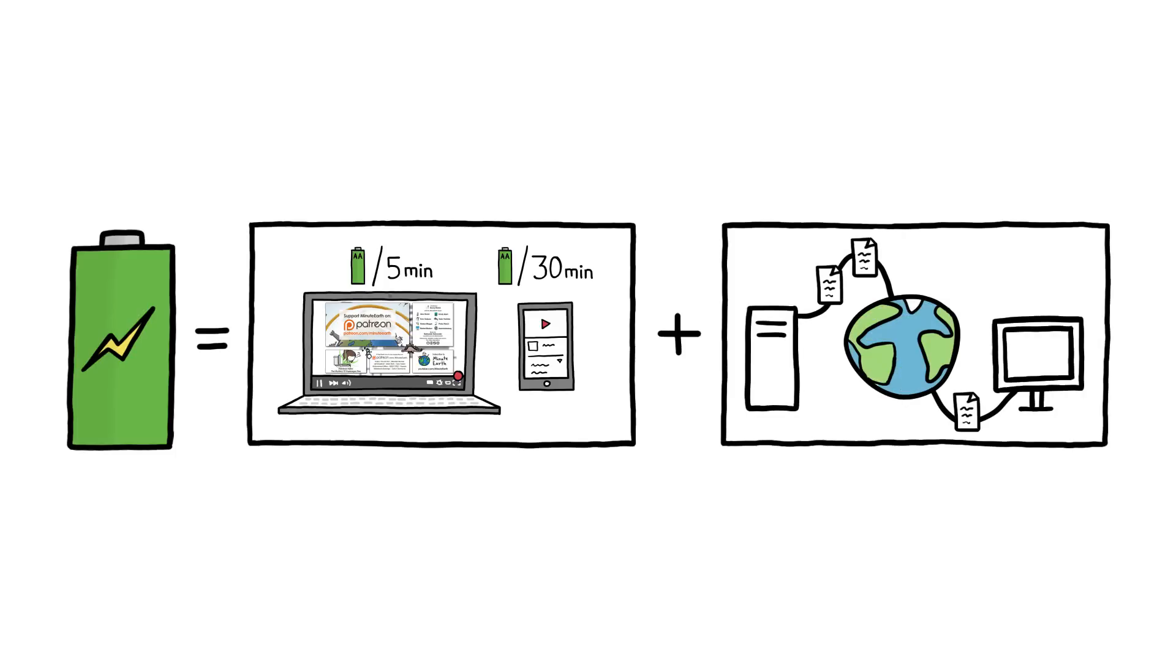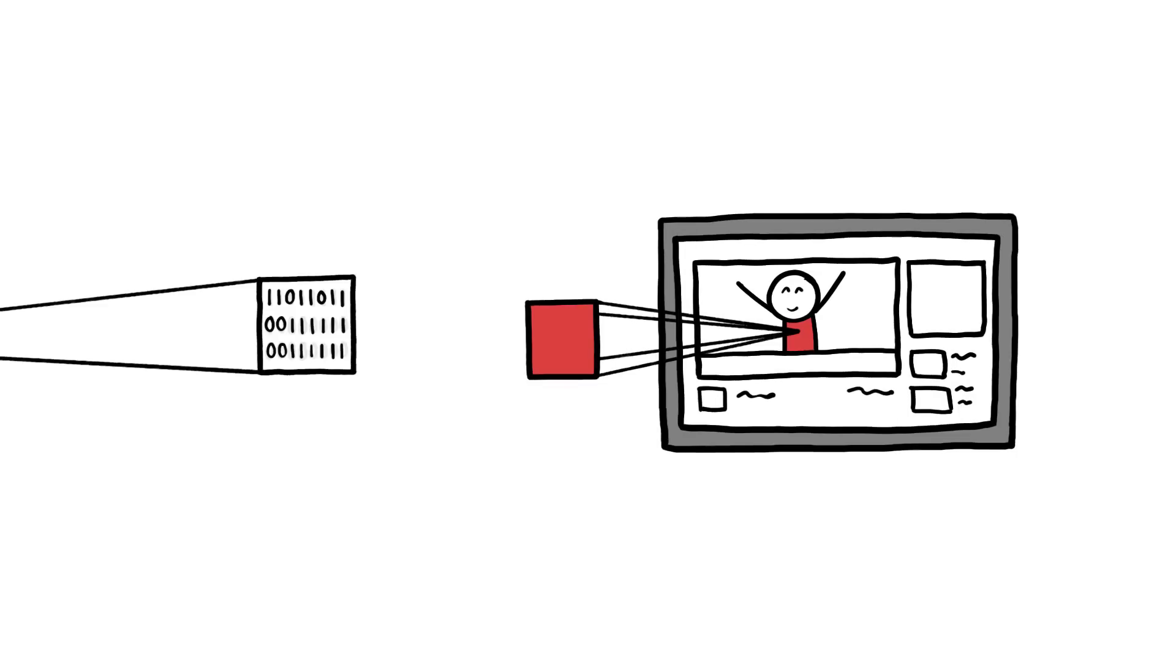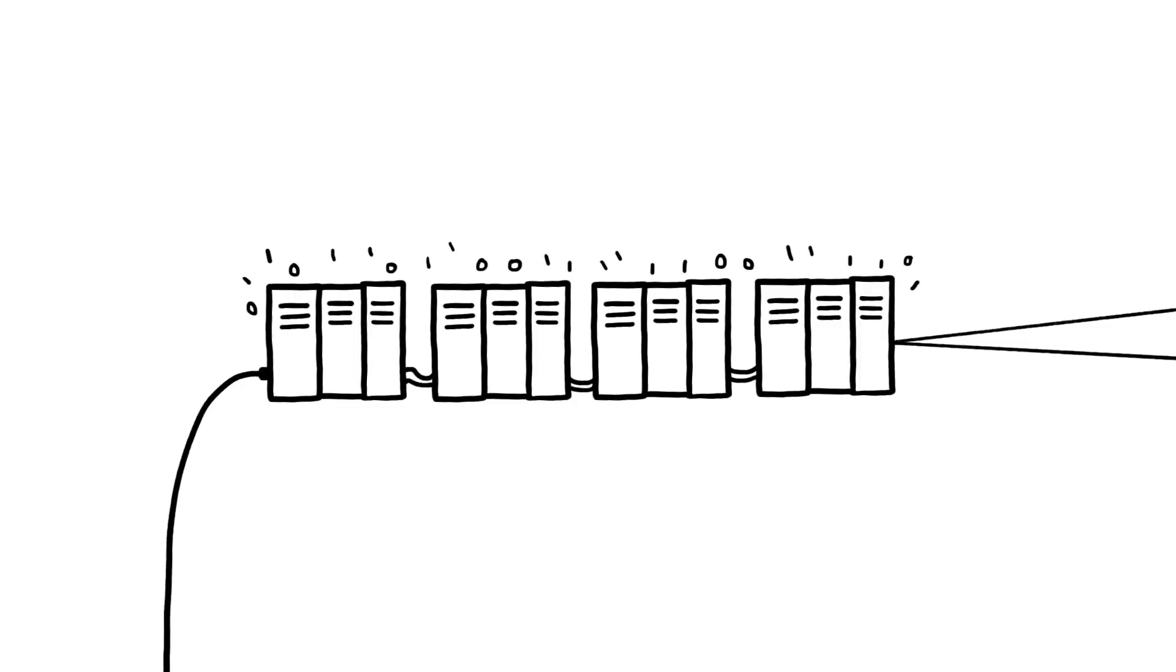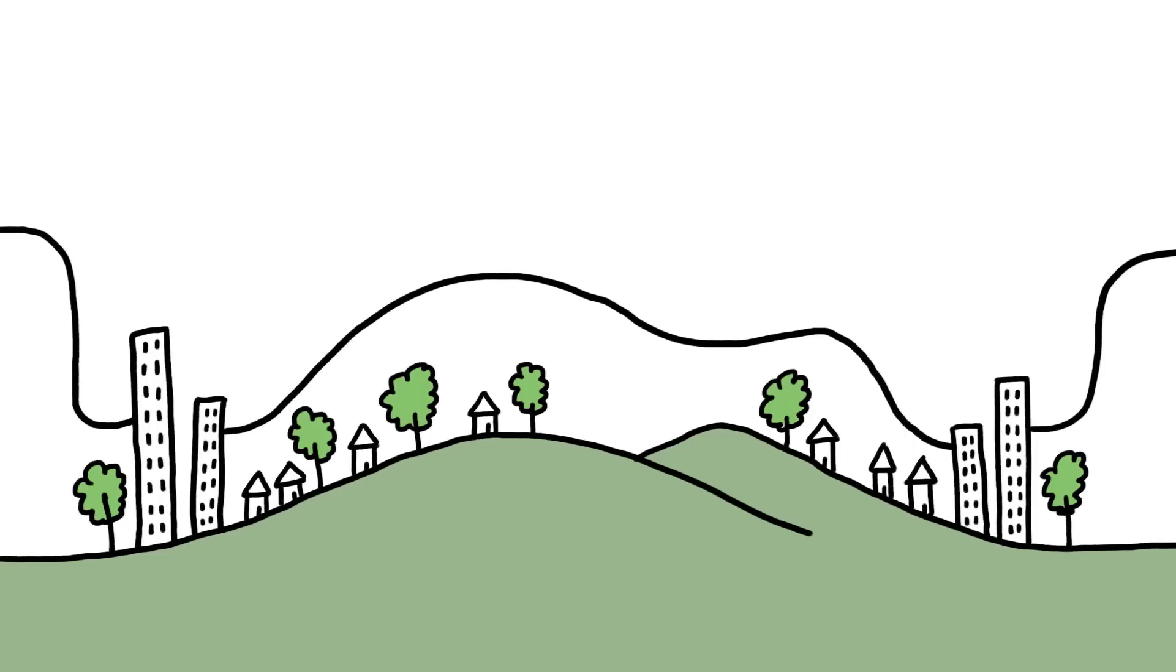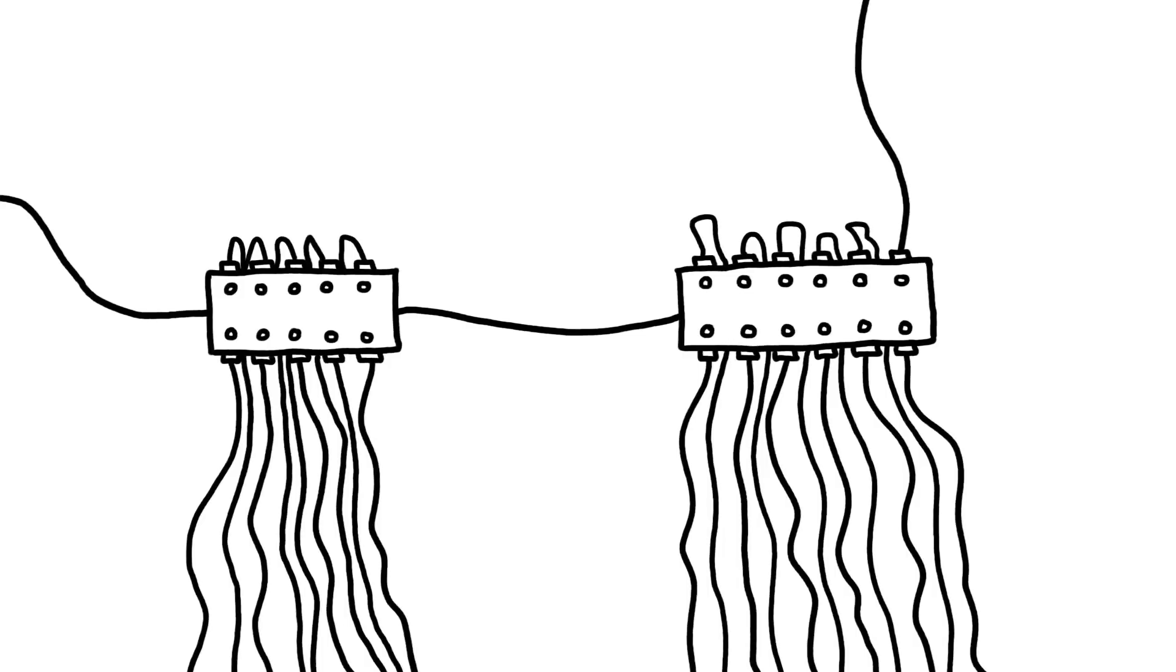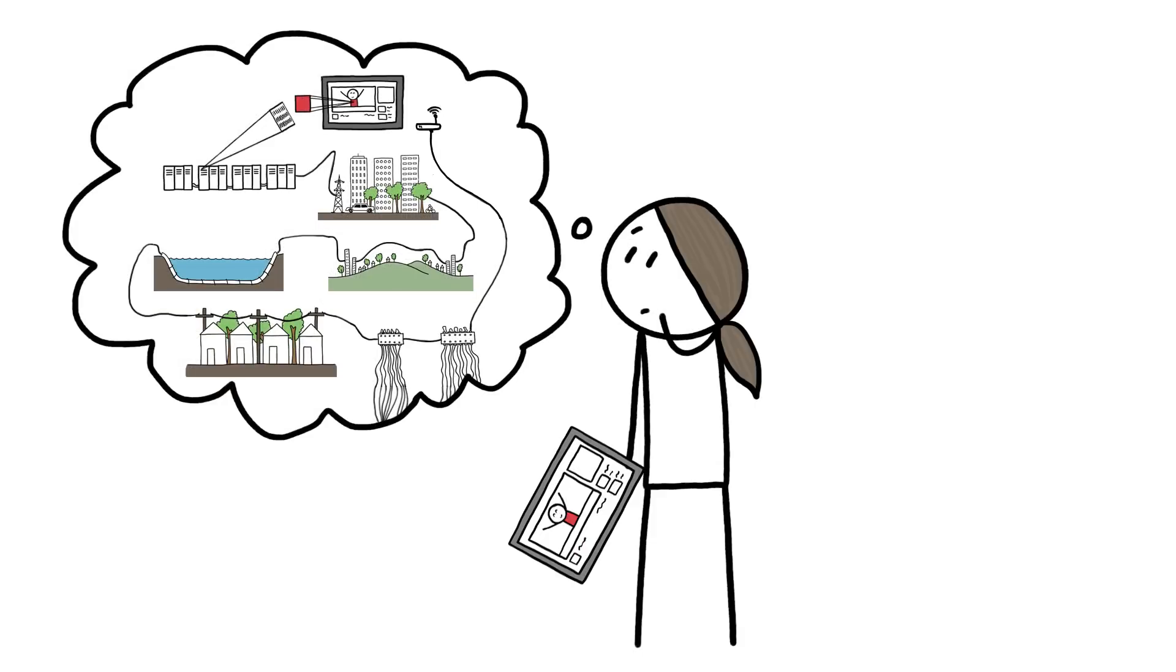The rest comes from delivering the data to your screen. Every pixel of every frame starts off as a string of zeros and ones stored somewhere on a distant server until called for, at which point those zeros and ones are transferred via local metro networks, high-capacity long-haul networks, undersea cables, more local networks, local access points, and your own internet router, all before reaching your screen.